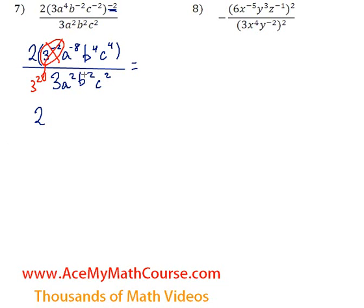And now I'm just going to combine all the variables. So a to the power of negative 8 over a squared is just a to the power of negative 10, since negative 8 minus 2 is negative 10. Then we have b to the power of 4 over b squared, 4 minus 2 is 2, so we have b squared on top now. And same thing with the c, c to the 4 over c squared is just c squared on top, on the numerator.